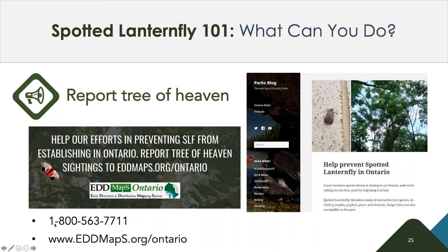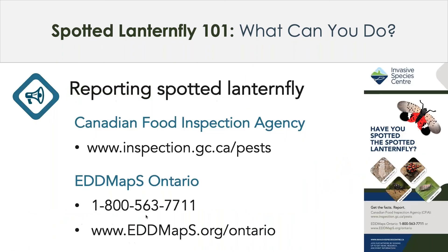We promoted a tree of heaven identification campaign through our Community Action Project, the EDRR network, and the parks blog. We want to know where tree of heaven is because it is a preferred host of Spotted Lanternfly. We don't have a correct map of it. You can report tree of heaven through the EDMaps Ontario phone number, the website, and there's also an app. If you're a naturalist and you get out in the world a lot, report all the invasive species you see — and definitely report tree of heaven.